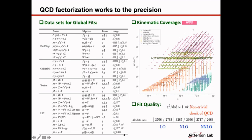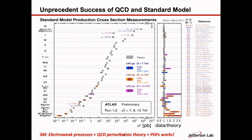With one set of parton distributions plus perturbative QCD for the hard part and electroweak theory, you can really see the consistency between theory and experiment. The electroweak processes plus QCD perturbation theory and universal PDFs works — it's an unprecedented success of QCD and the standard model. Parton distributions are necessary; you have to extract them precisely. They are not only a test of QCD theory but also a tool giving us confidence to eventually test and discover physics beyond the standard model.